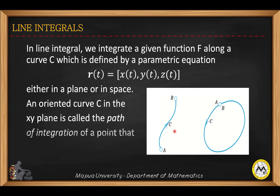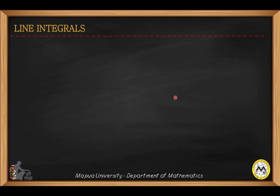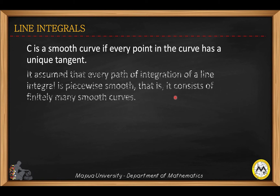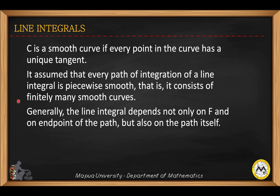An oriented curve c in the xy-plane is called the path of integration of a point that moves from the initial point a to b. The second figure shows a closed path, where a is the initial point and b is the terminal point. C is a smooth curve if every point in the curve has a unique tangent. It is assumed that every path of integration of a line integral is piecewise smooth — that is, it consists of finitely many smooth curves.